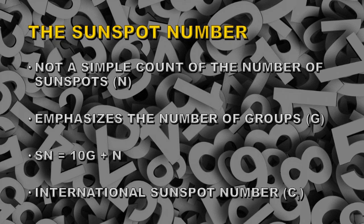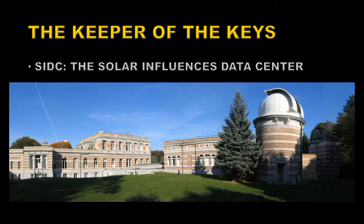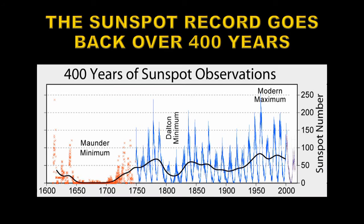Remember, sunspots come and go fairly quickly, so one observatory in one time zone may not see the same spot configuration as an observatory in another time zone. The keeper of this system is the Solar Influences Data Center, which is located in the Royal Observatory in Belgium.